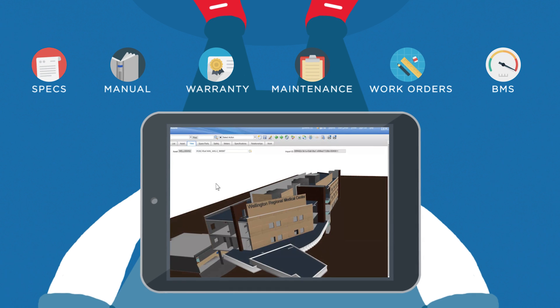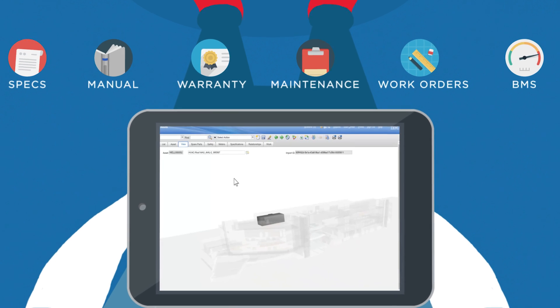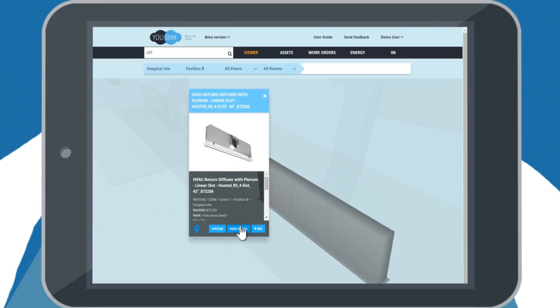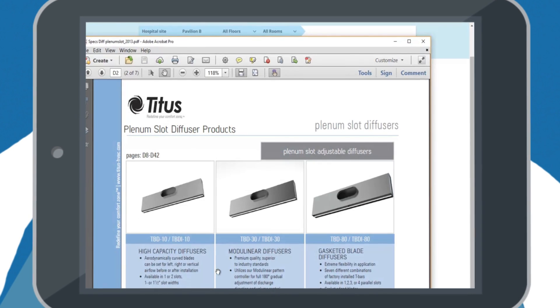UBIM can integrate this BIM data with your work order, preventive maintenance management system, as well as with your BMS building management automation systems, also making live buildings' performance data instantly accessible.